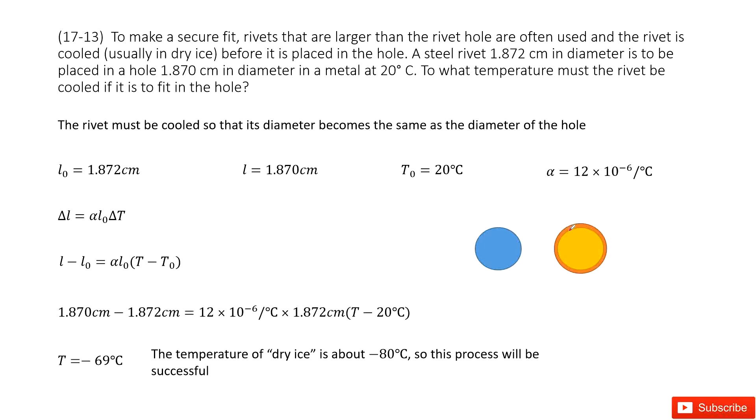So we want to put this orange part into this blue part. It looks impossible, right? Because this is larger than this one. So we have a technology. We can make the rivet cool down. When it is cool, the diameter will decrease.